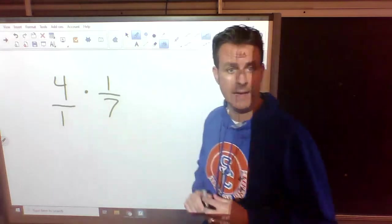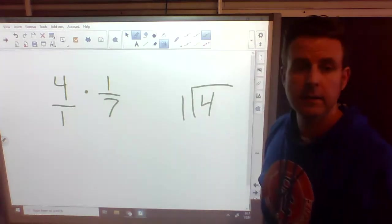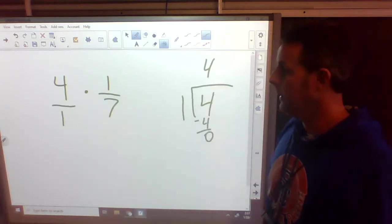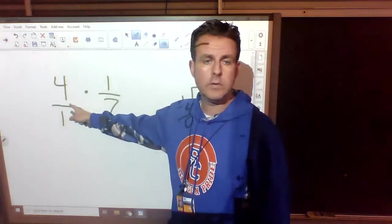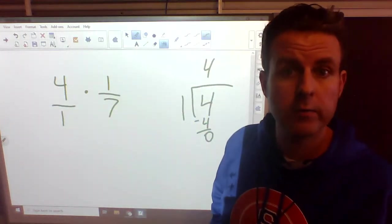Remember, the fraction line, it means divided by. So we have 4 divided by 1. Well, what's 4 divided by 1? 4. We're done. So you can turn a whole number into a fraction just by putting it over 1.